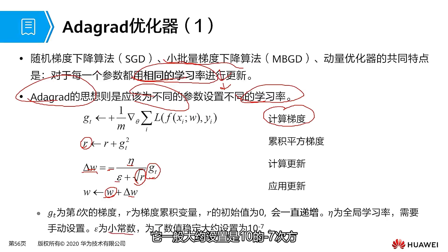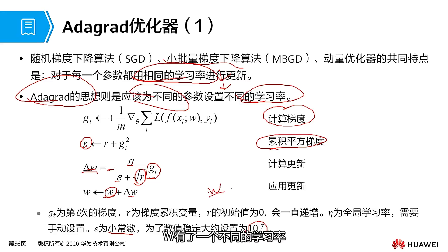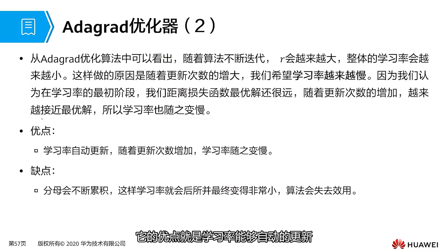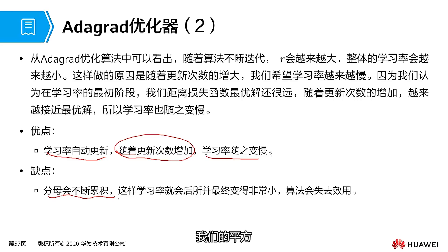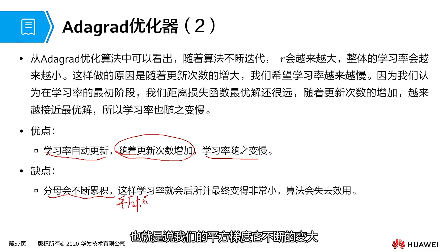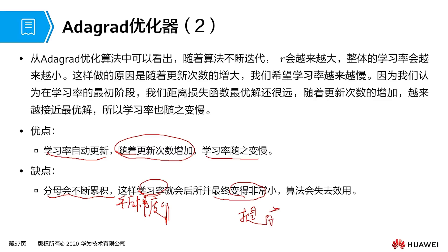We use the square of the gradient to assign a different learning rate to each delta W. The advantage of AdaGrad is that the learning rate can update automatically: with the increase in the number of updates, the learning rate slows down accordingly. The disadvantage is that as the denominator continues to accumulate — our squared gradients keep getting bigger — the learning rate will become smaller and smaller, resulting in stopping the parameter updates in advance. The algorithm did not find the minimum point of the loss function before it stopped. This is one of its drawbacks.